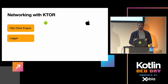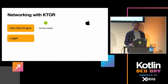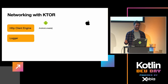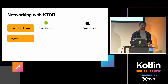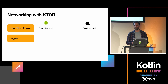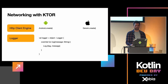But what about the HTTP engine and logger? Those differ per platform. For Android, you add the Ktor Android dependency and call Android.create(). For iOS, you use the Ktor Darwin dependency and call Darwin.create(). For logging, Android uses Android.log.i by default. But how do we handle this in common code — is there some kind of if-statement?